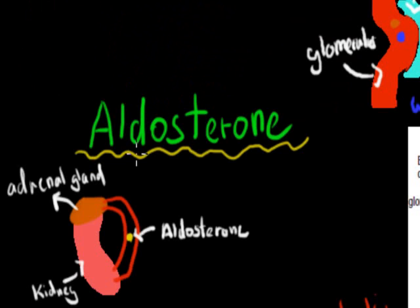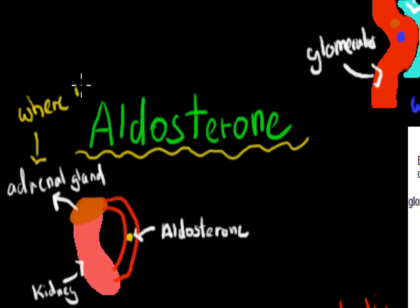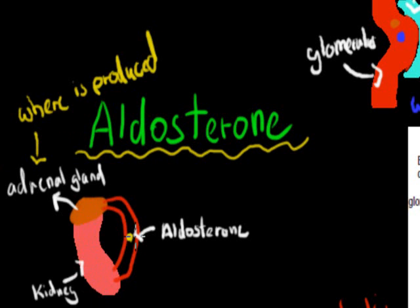The first hormone we're going to cover is aldosterone. Aldosterone is produced by the adrenal gland, which is located just above the kidney itself. So this is the kidney, and this is the adrenal gland. But there is still a blood vessel connection between the adrenal gland and the kidney. So you can imagine this yellow dot here — aldosterone — gets produced and then travels into the kidney and has its effect there.